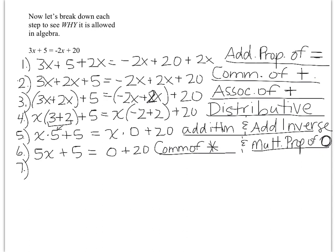Step seven: 5x plus 5 equals 20. I changed 0 plus 20 to just 20. That is the additive identity property.